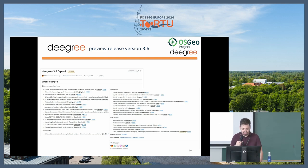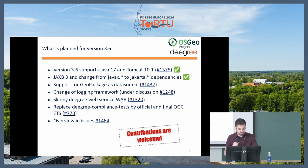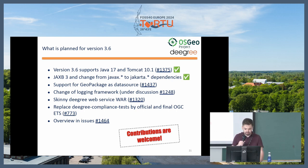This is the GitHub release page for the latest pre-release of Degree 3.6. The key features are that Degree 3.6 supports Java 17 and Tomcat 10.1, JXP 3 is supported, and there is a change from the Java X to the Jakarta namespace. We also support GeoPackage as a data source, changed the logging framework, there will be a skinny Degree web services WAR, and we will replace the compliance tests with new tests.